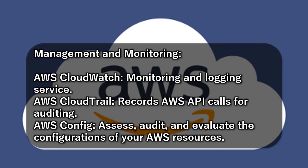Management and Monitoring: AWS CloudWatch is a monitoring and logging service. AWS CloudTrail records AWS API calls for auditing. AWS Config allows you to assess, audit, and evaluate the configurations of your AWS resources.